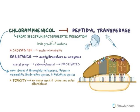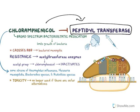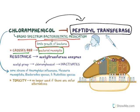Chloramphenicol acts by inhibiting the peptidyl transferase enzyme of bacterial protein synthesis. It is a broad-spectrum bacteriostatic medication — it limits the growth of bacteria but does not act as a bactericidal agent. It crosses the blood-brain barrier, making it very useful for treating bacterial meningitis. Meningitis is inflammation of the external protective layers of the brain, which are made up of the dura mater, arachnoid mater, and pia mater.